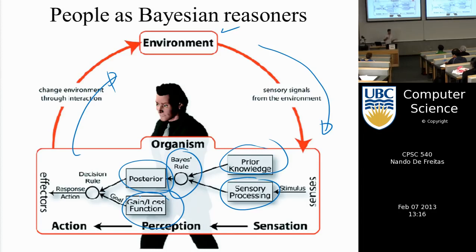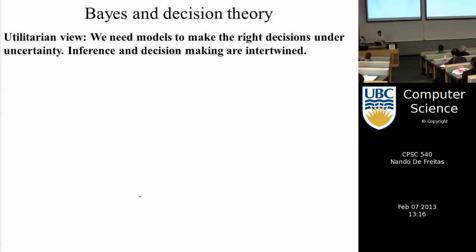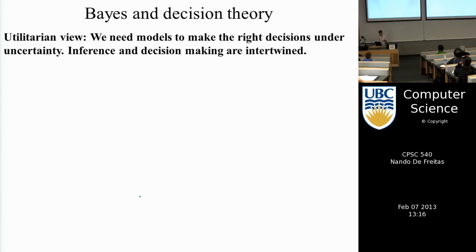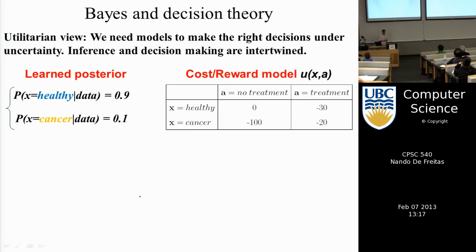Rewards and costs are called utilities. This is the utilitarian view of decision making. To make the right decision under uncertainty we need two components: a probabilistic model of the environment — a posterior — and a utility function. For example, the probability that patients in Canada are healthy given the data might be 0.9, and the probability they have cancer is 0.1.